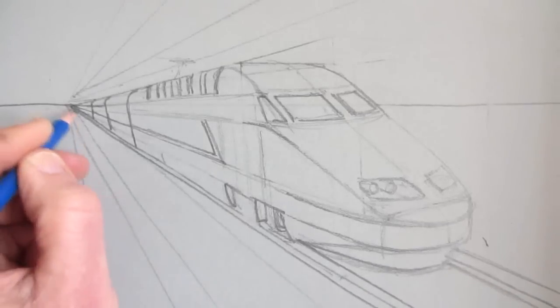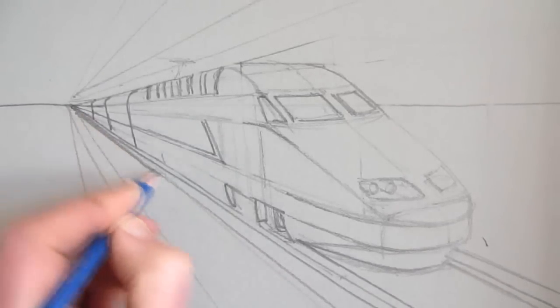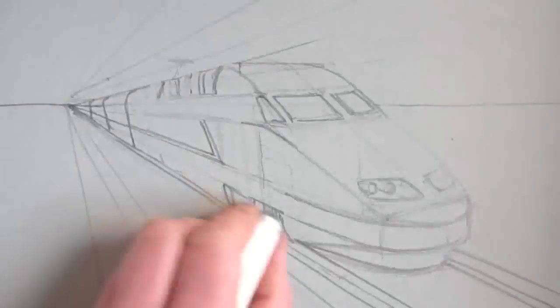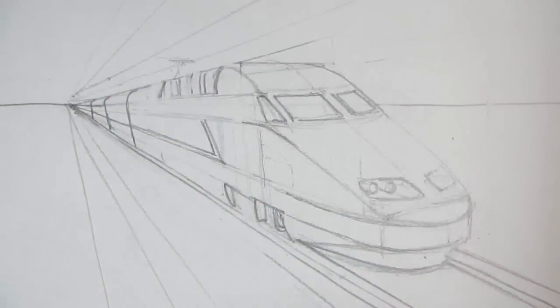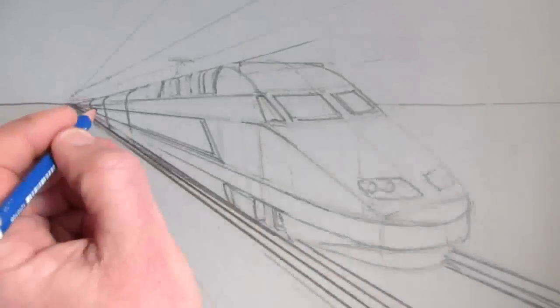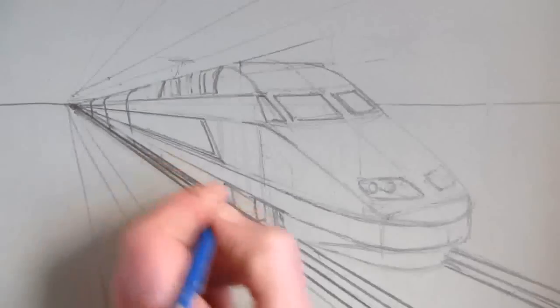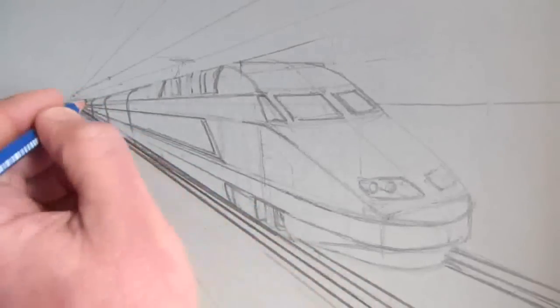I then add some more rail lines on the ground to make it seem busier and also to give the illusion of the train moving faster towards us, and start to darken some of the lines that I have.